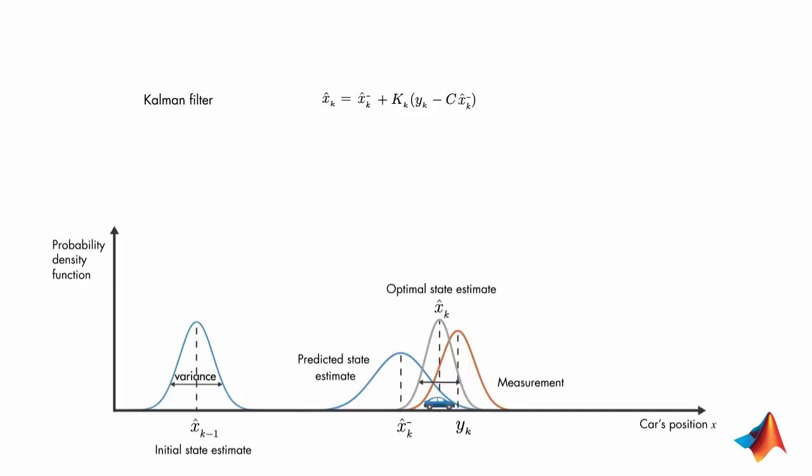The second part of the equation uses the measurement and incorporates it into the prediction to update the a priori estimate. And we'll call the result the a posteriori estimate.